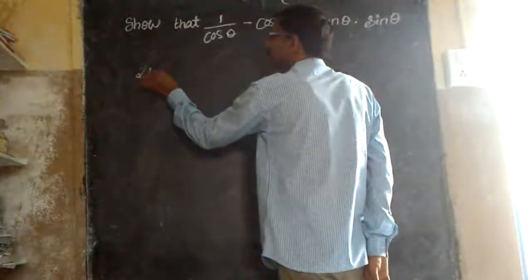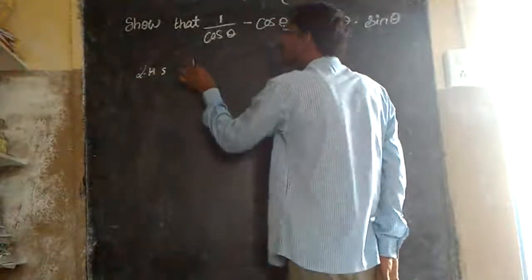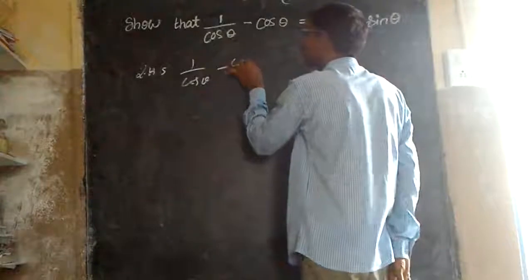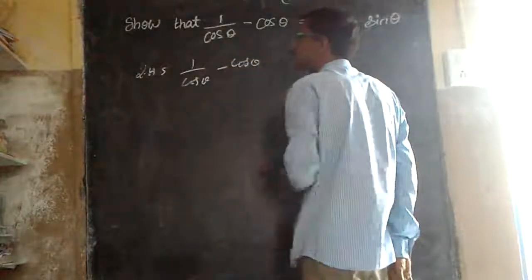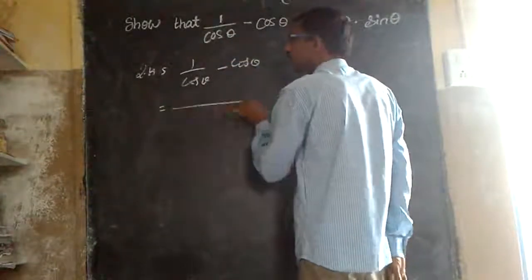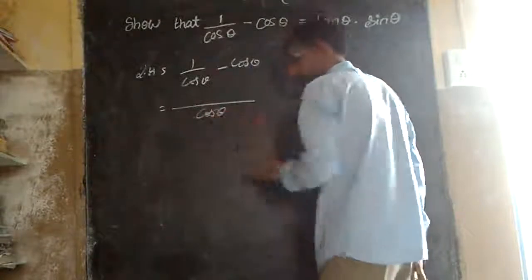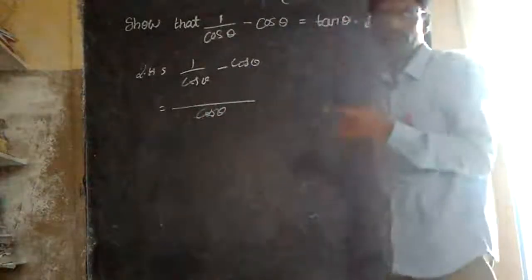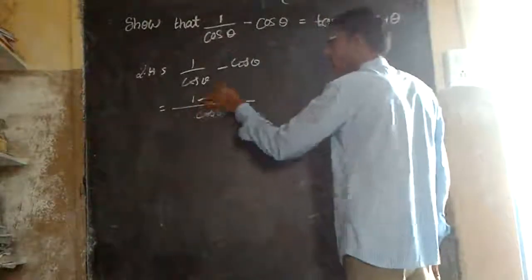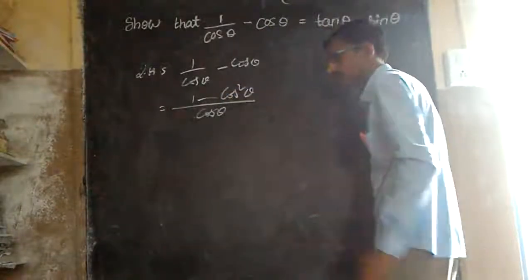Take LHS as it is: 1 by cos theta minus cos theta. By taking LCM cos theta, 1 minus — this is multiplied by this one — cos square theta.